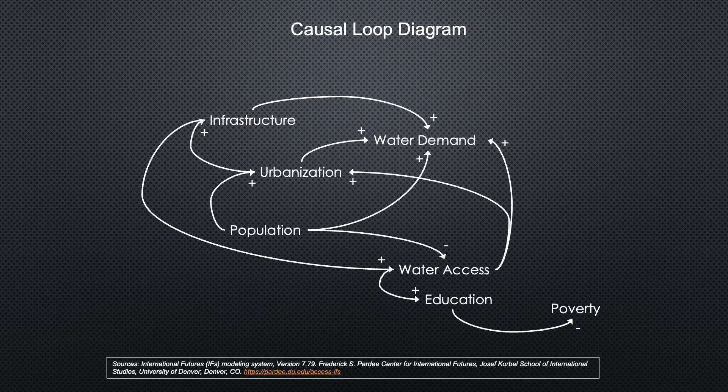Additionally, the increase in water access increases people's education opportunities, which will reduce the overall poverty of the country. The increase in safe water infrastructure results from population growth and urbanization. As the government invests in safe water infrastructure in the cities, more people are moving into the cities, reducing water access and requiring additional infrastructure to accommodate the people. The system interactions require increased access to water to improve education opportunities and decrease poverty. When people do not spend so much time finding water, they can do other things to better their lives.